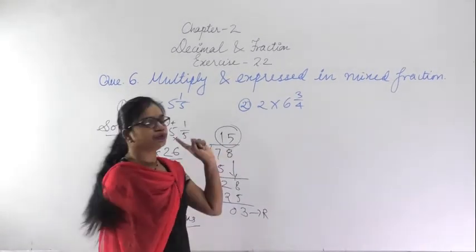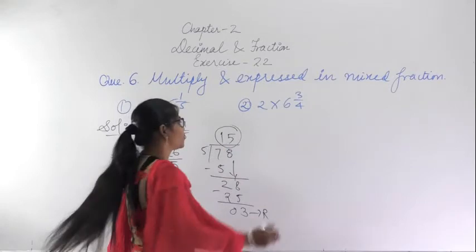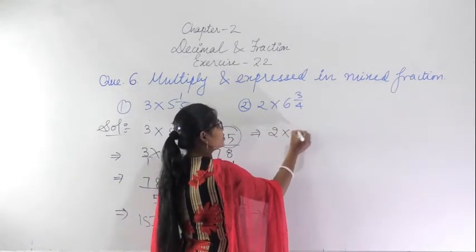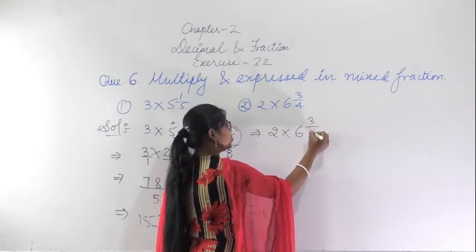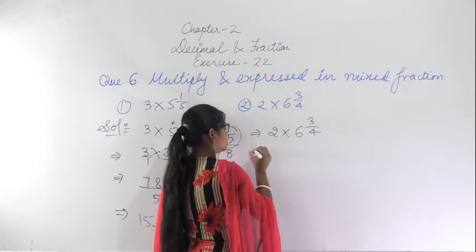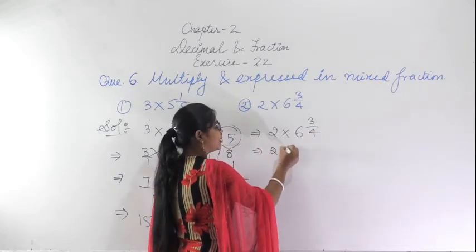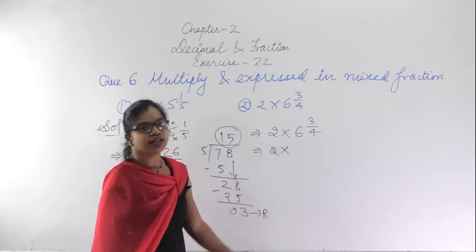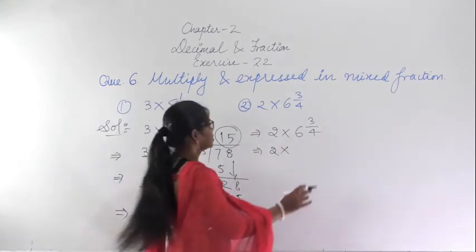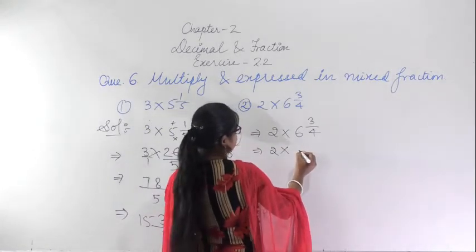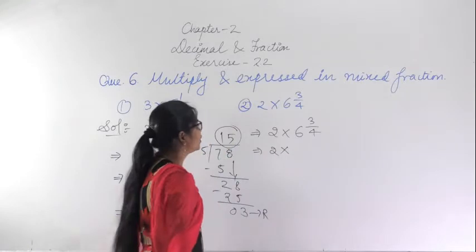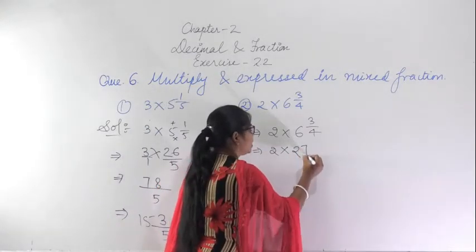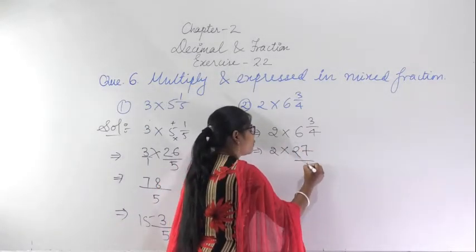Similarly for the second question: 2 multiplied by 6 and 3/4. Convert 6 and 3/4 into a proper fraction: 6 fours are 24, plus 3 is 27. So it becomes 27/4. Now multiply 2 by 27/4.